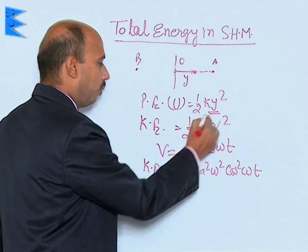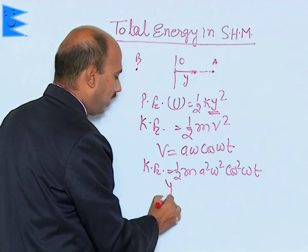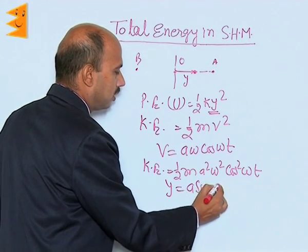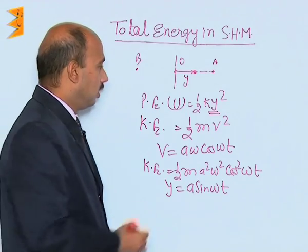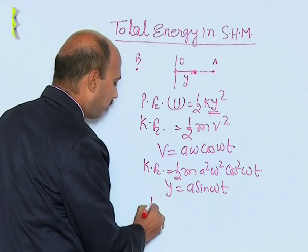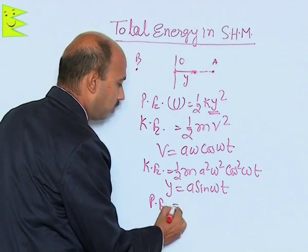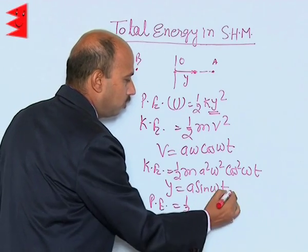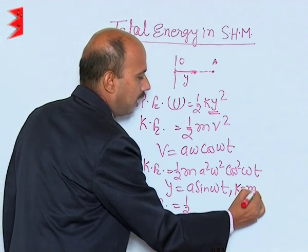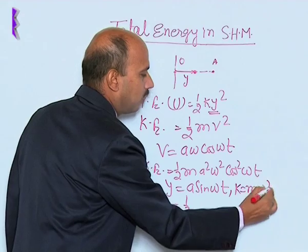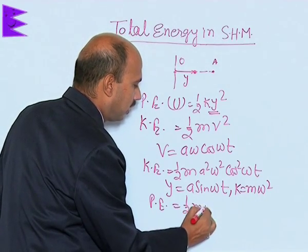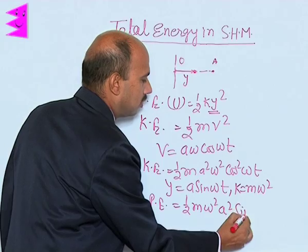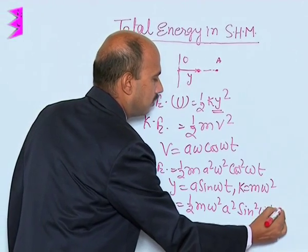Similarly, we can put here y = A sin ωt for the displacement. So we can write potential energy as ½ × mω² × A² sin²ωt, since k = mω².